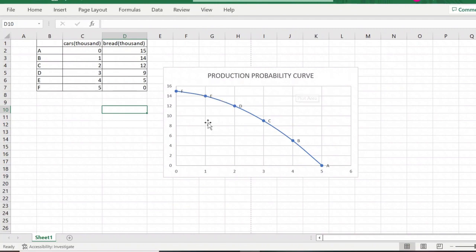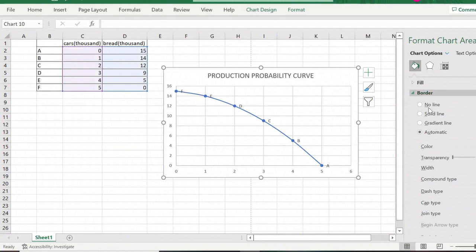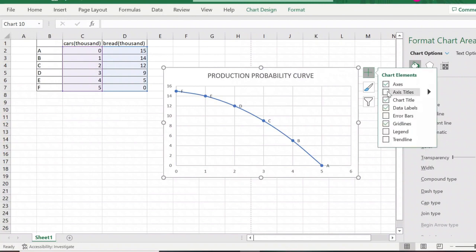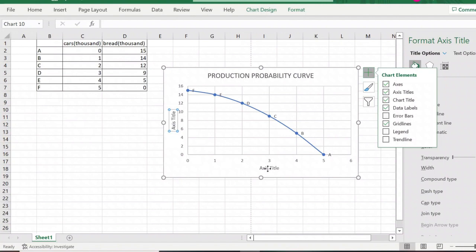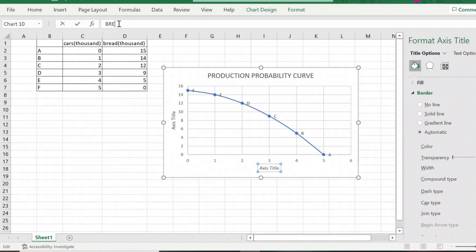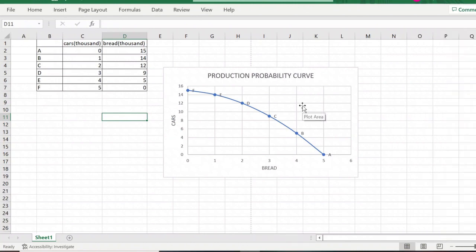Now we want to add the axis titles, the car title and the bread title. How do we add it? Simple. Click here, the chart area, and you just click chart elements and click axis title. Okay, now you just change it. In here, it should be Bread, and in here, it should be Car. Okay. That's how to make a production probability curve in Excel. Easy, right?